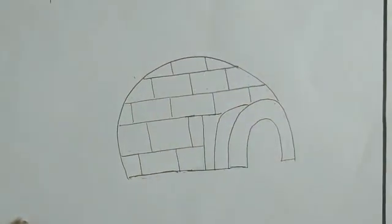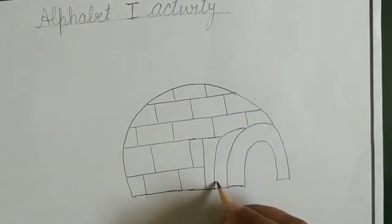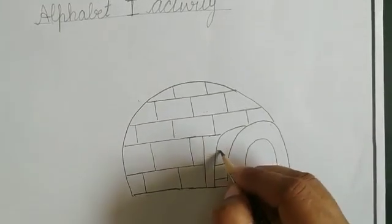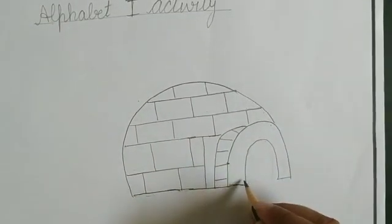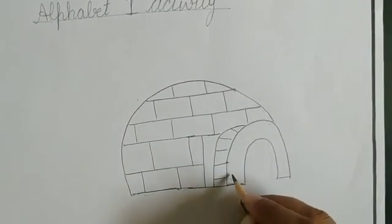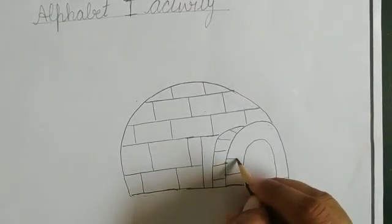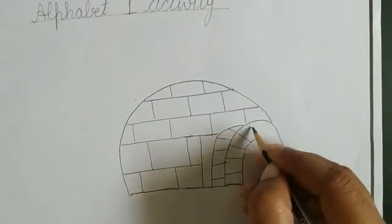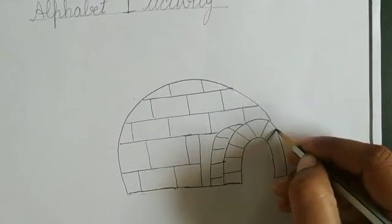I is for igloo. And kids, now we will draw a sleeping line here. We will make some sleeping lines just like this. Now we again make sleeping line here. Now draw slanting line, two slanting lines again.